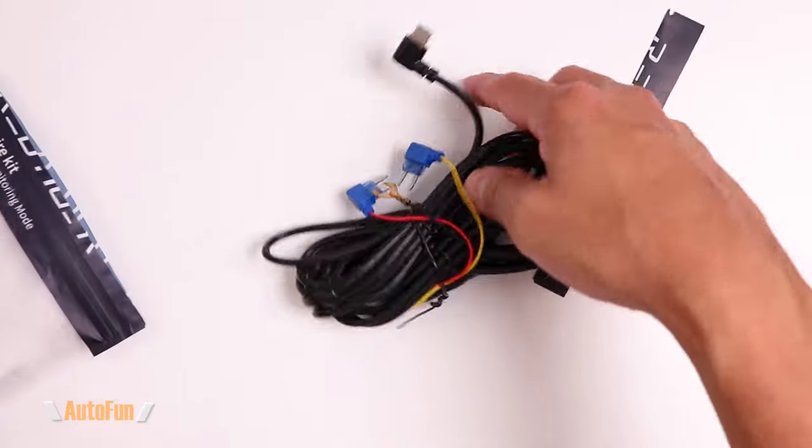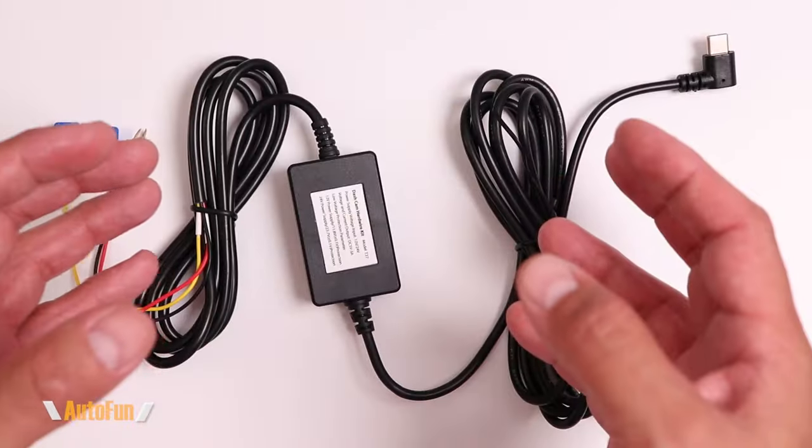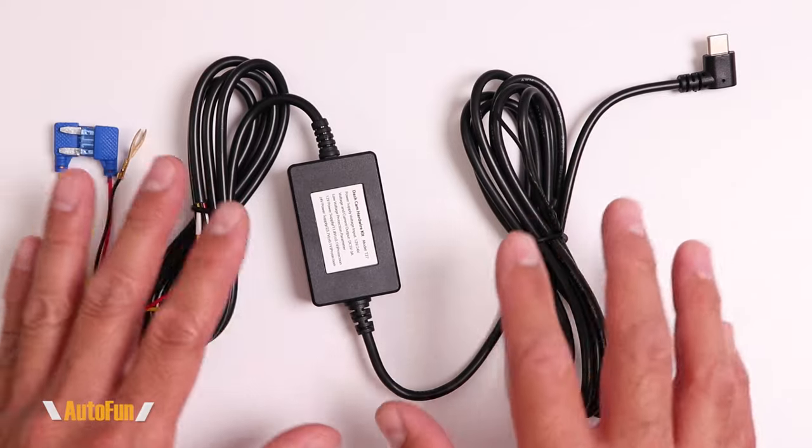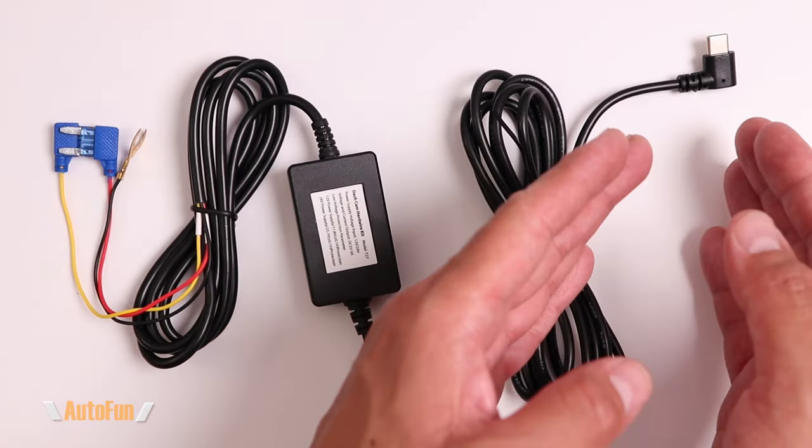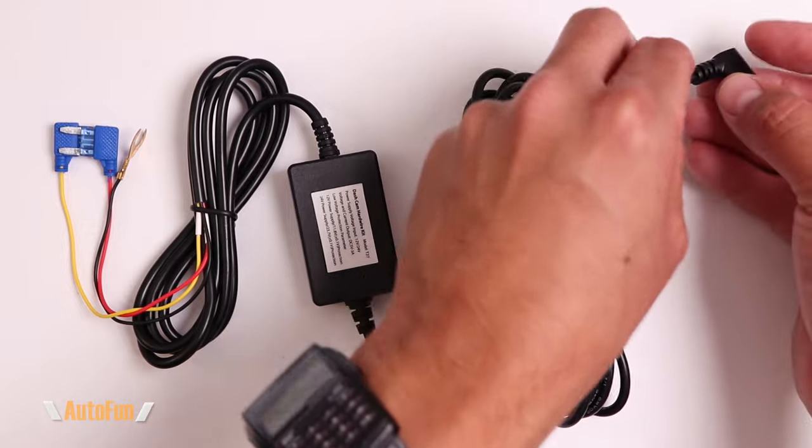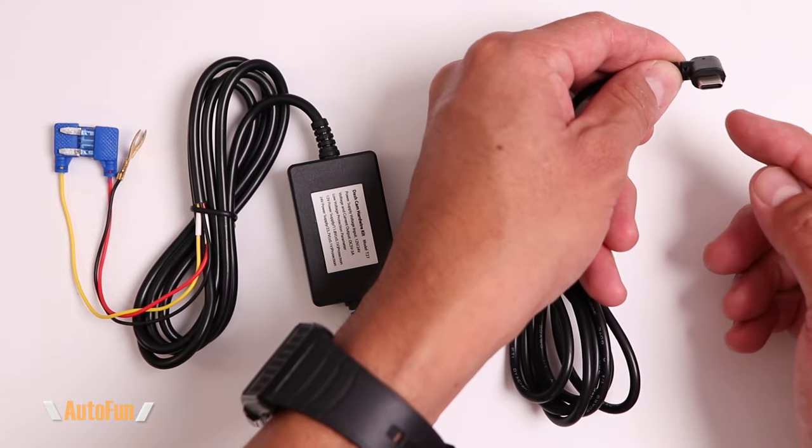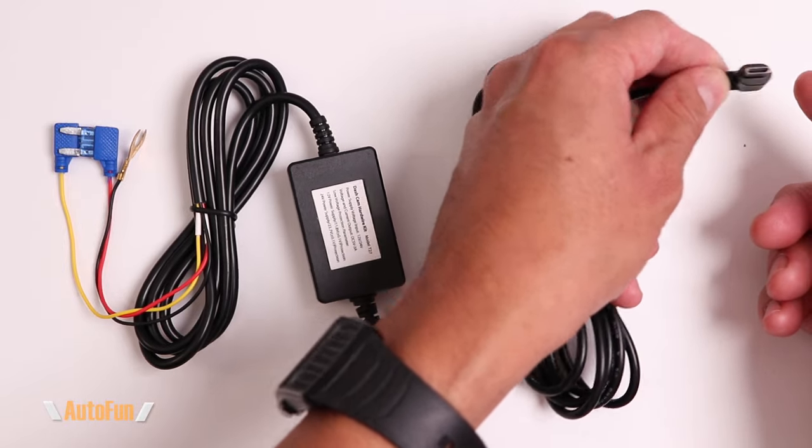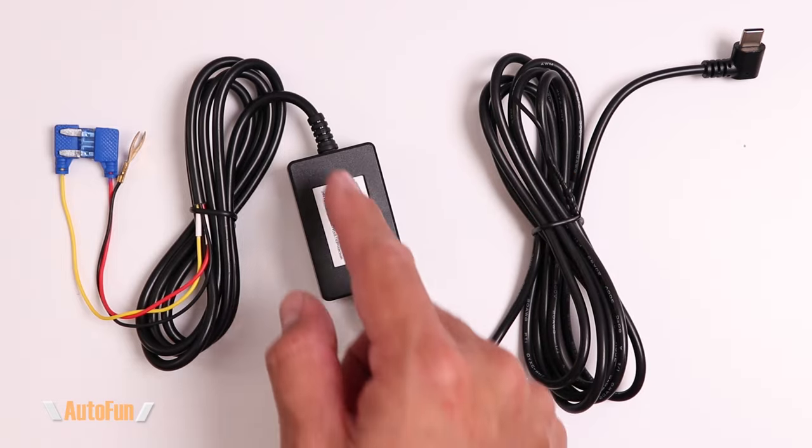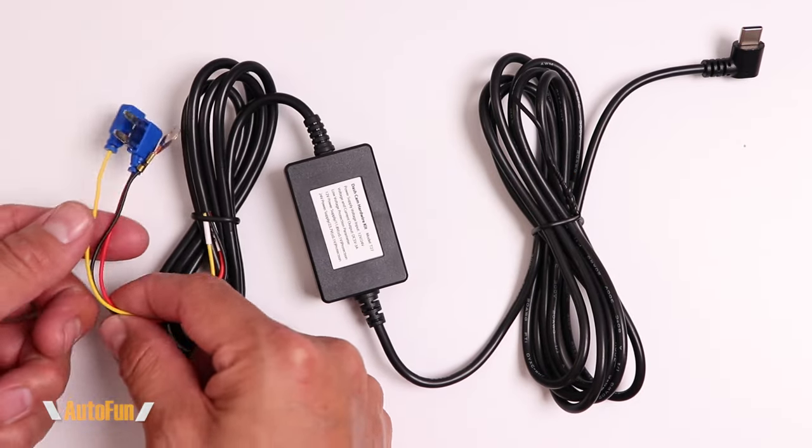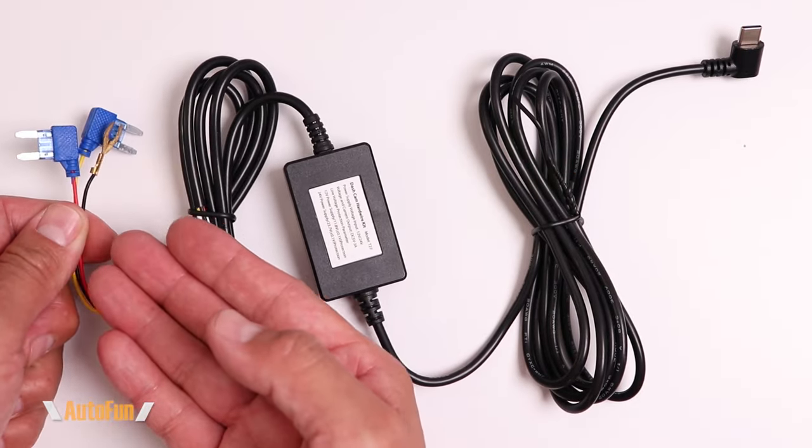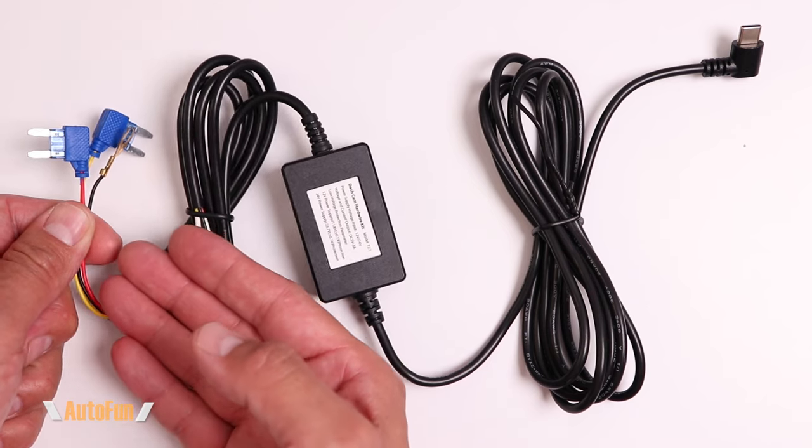Let's take a look at the Red Tiger hardwire kit. Here's the Red Tiger T27 hardwire kit. On this end we have a right angle USB-C type connector, and this connector is going to go to the dash cam. If we follow the hardwire kit all the way to the opposite end, this end is going to go to the fuse box of our vehicle.